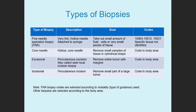An incisional biopsy uses a percutaneous incision to remove a small part of a large tumor, and this is also coded to the body area. So FNA biopsies are coded according to the fact that they're FNAs and also the type of guidance used, while other biopsies are coded to the specific body area.